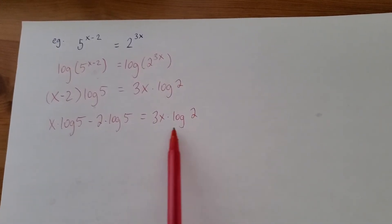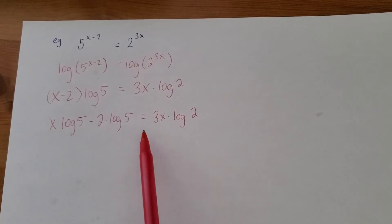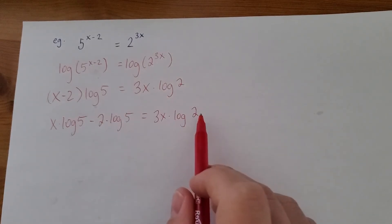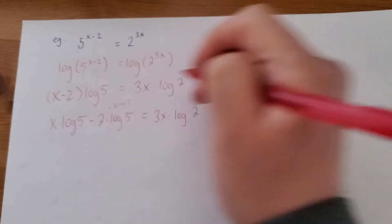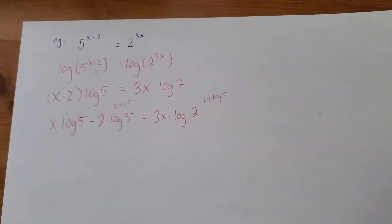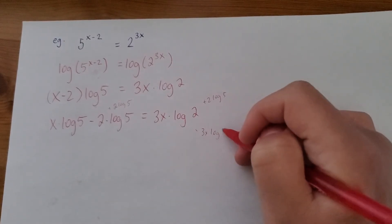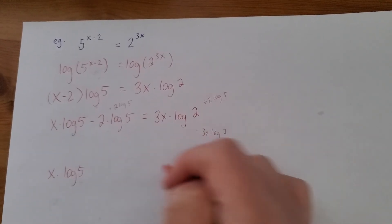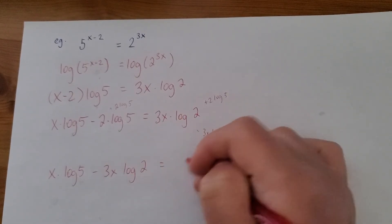What I want to do is get both my terms with an x on one side of the equation. So I'll gather them on the left. And I'm going to move this 2 log 5 to the right. So to do that, I'm going to add 2 log 5 to both sides. And if I subtract this one from both sides, here's what we'll end up with.